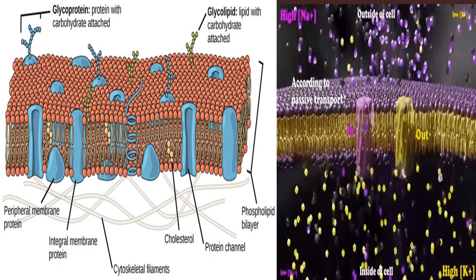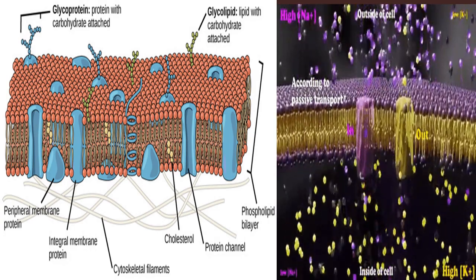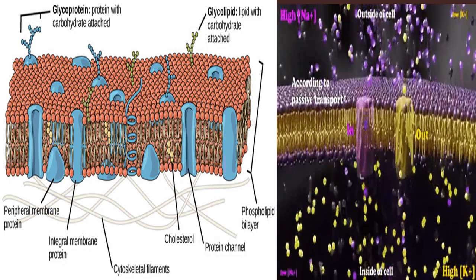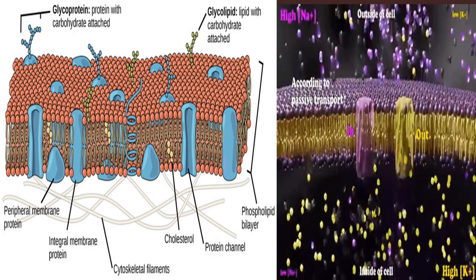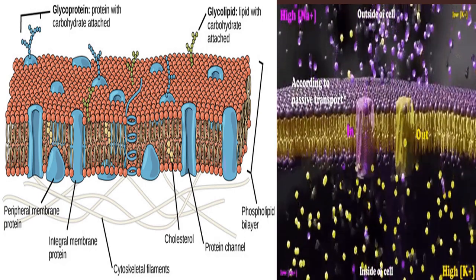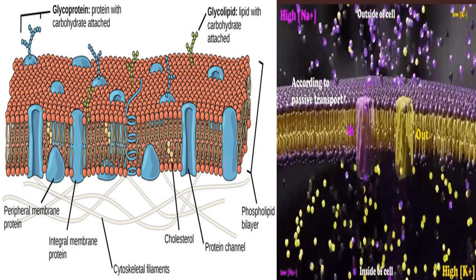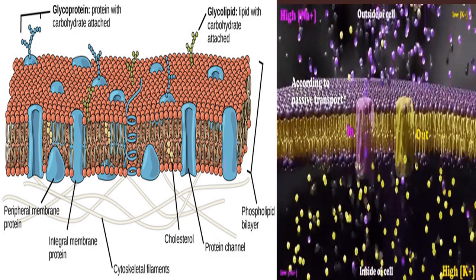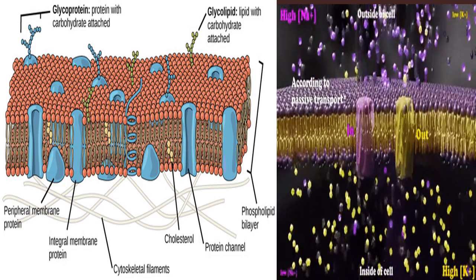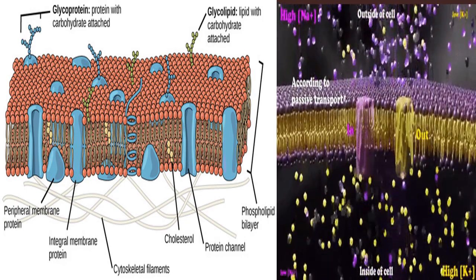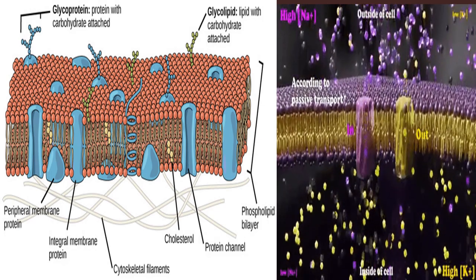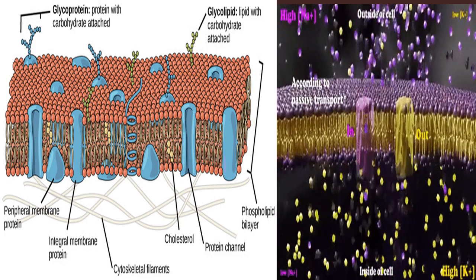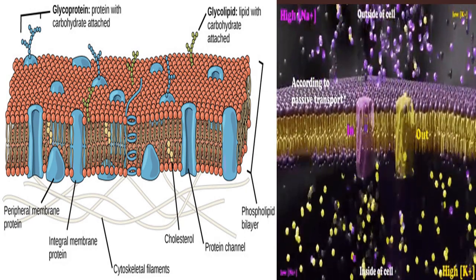The fluid mosaic model was first proposed by Singer and Nicholson in 1972 to explain the structure of plasma membrane. The model has evolved somewhat over time, but it still best accounts for the structure and function of plasma membranes as we now understand them. The fluid mosaic model describes the structure of plasma membrane as a mosaic of components including phospholipids, cholesterol, proteins, and carbohydrates that give the membrane a fluid character.